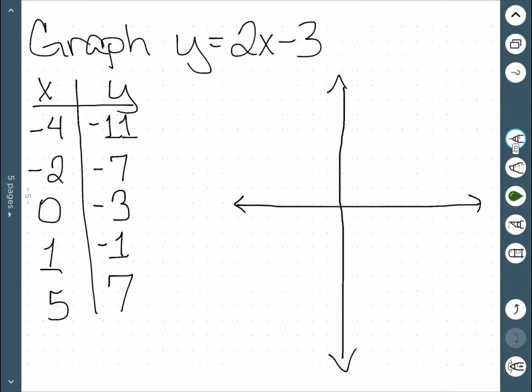And now, essentially, we just want to graph these points. I'll start at the bottom. We need to go over to the right 5, and then up 7. That gets us this point here.